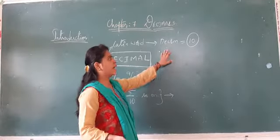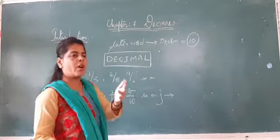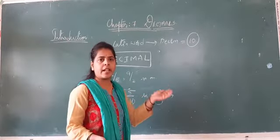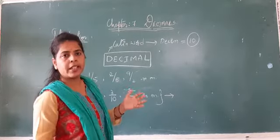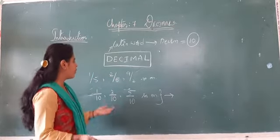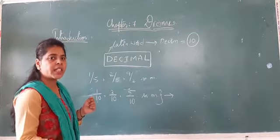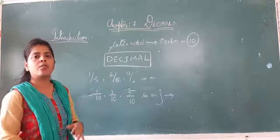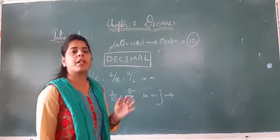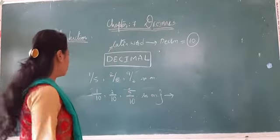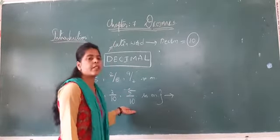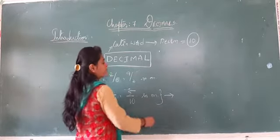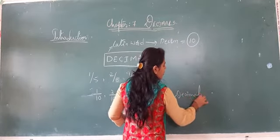As I said, 'decimal' is a Latin word meaning equal to 10 — it relates to the fraction weight. So fractions like 1 by 5, 2 by 5, 9 by 5 — when you divide and put a decimal point to make the remainder 0, whatever quotient you get in decimal form, that is the decimal. These fractions are called decimal fractions because they relate to powers of 10, 100, 1000, and so on.